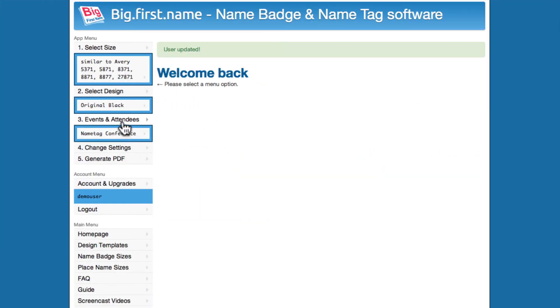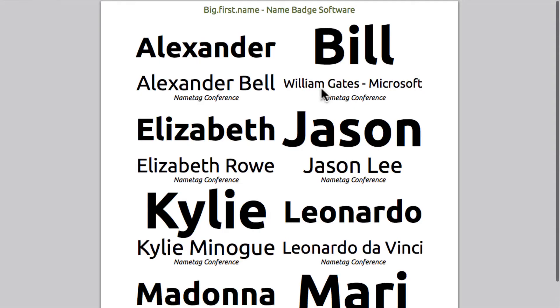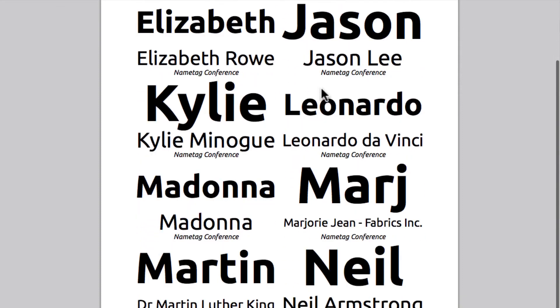Now let's go back to the event list and check the print view. The event name tags can be printed directly from the PDF link next to the event name. Some great looking name tags — they can now be printed ready for the event.